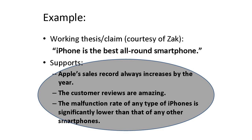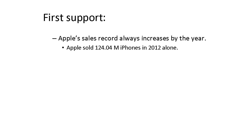We are going to apply the binary thinking method to develop each of these supporting arguments. For the first supporting argument — Apple's sales record always increases by the year — normally we would try to use sources that confirm our supporting argument. Such as: Apple sold 124 million iPhones in 2012 alone.